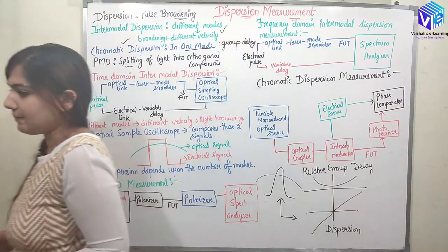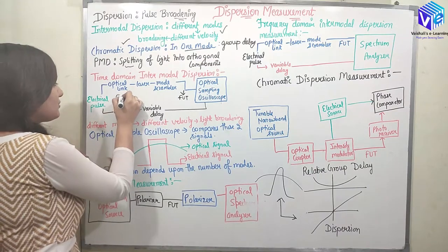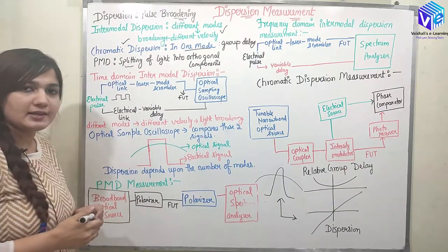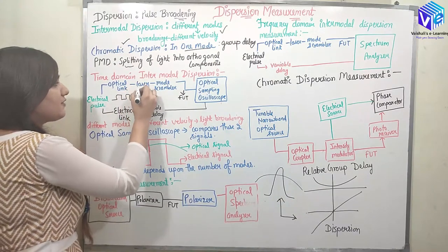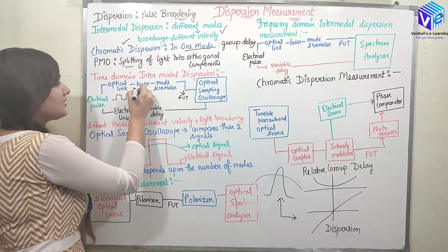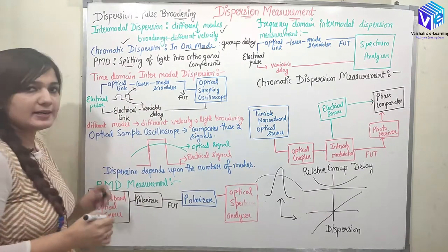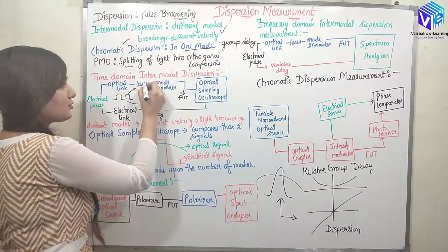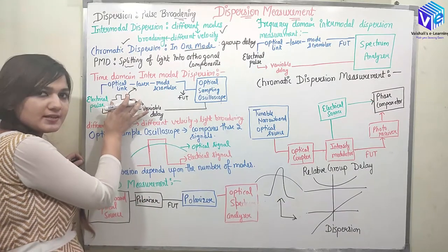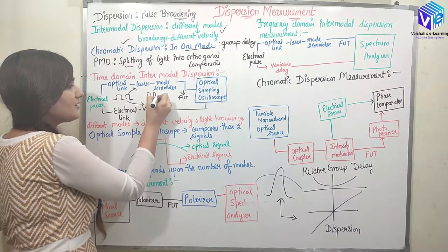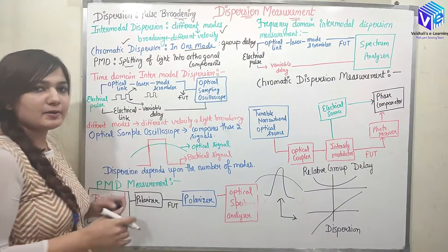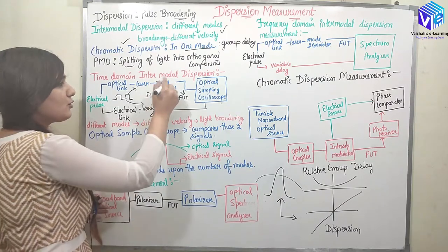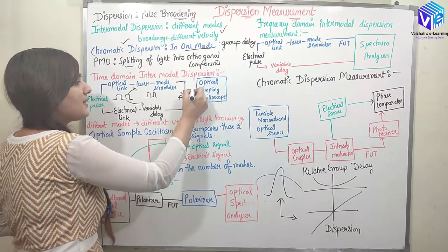First of all we will be taking an electrical pulse as the input signal. We will send this input signal to both the optical link and the electrical link. In the optical link we will have a laser. We send this signal to the laser and also to a variable delay. The laser produces light in accordance with the signal — the light intensity corresponds to the signal. Then we have a mode scrambler, which scrambles and intermixes the different modes. After the mode scrambler we have the fiber under test.